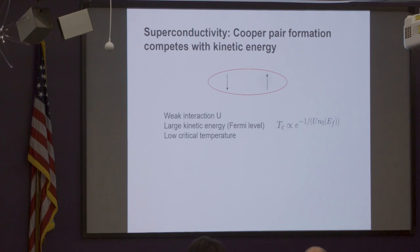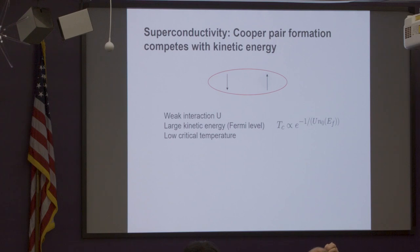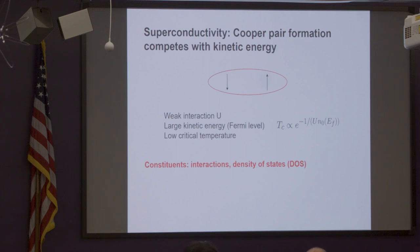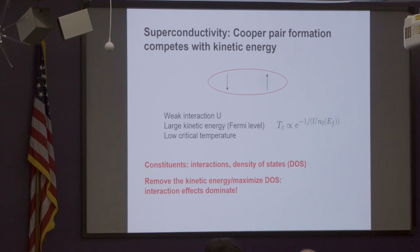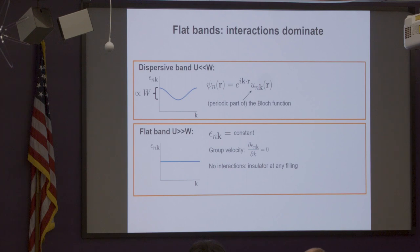Let's start from a trivial thing — BCS theory. The T_c is exponentially suppressed, as you know: it can be some generic interaction scale and the density of states, and this form comes from the fact that there is a large Fermi level and the weak interaction has to compete with that. Within this framework the constituents of superconductivity are that you could change the interactions or change the density of states. The obvious idea is to remove the kinetic energy — to maximize the density of states — and then interactions might dominate, giving you easier pairing.